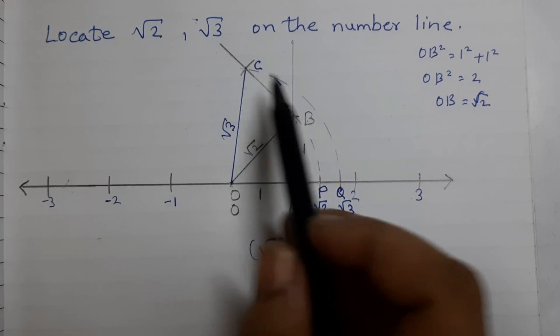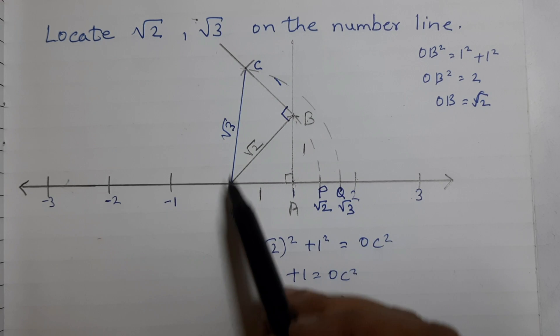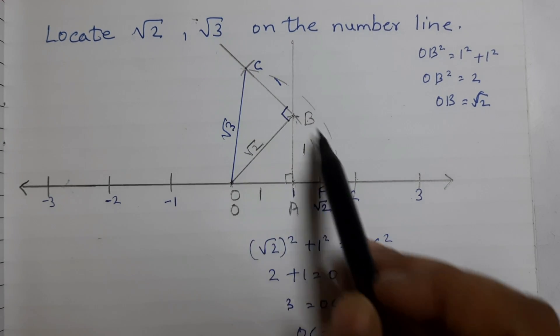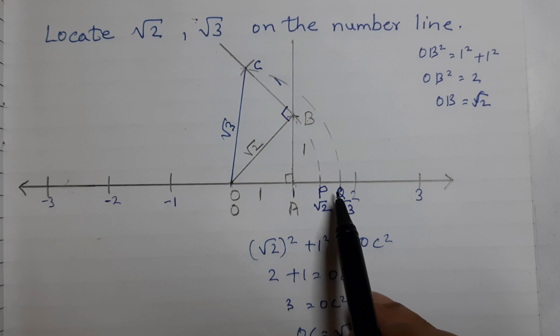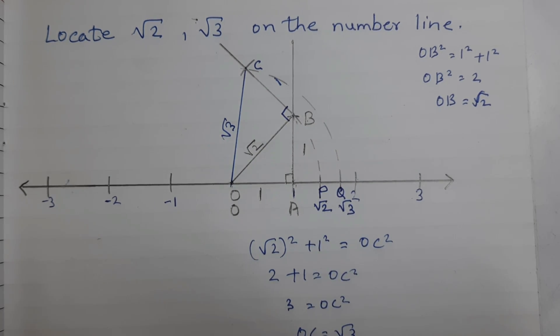Because if you take this as a circle, this is the radius root 3. So, this point from 0 to Q is also square root of 3. In the next video, we will learn how to plot square root of 5 on the number line. Thank you.